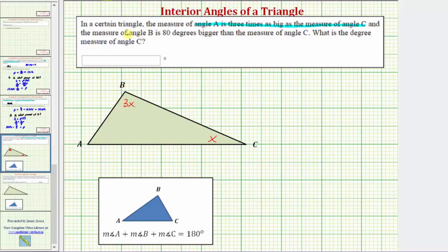And then we're also told the measure of angle B is eighty degrees bigger than the measure of angle C. Again, angle C measures x degrees, and therefore angle A measures x plus eighty degrees.